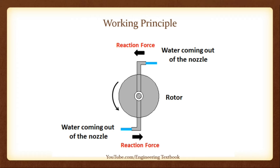Working Principle of Reaction Turbine. The working of reaction turbines can be well understood by taking a rotor with a moving nozzle, with high pressure water coming out of the nozzle. As the water leaves the nozzle, a reaction force is experienced by the nozzle. This reaction force rotates the rotor at very high speed. In the same way, in reaction turbines, a reaction force is generated by the fluid moving on the runner blades, which makes the runner rotate. The fluid after moving over the runner blades enters into the draft tube and finally to the tailrace.